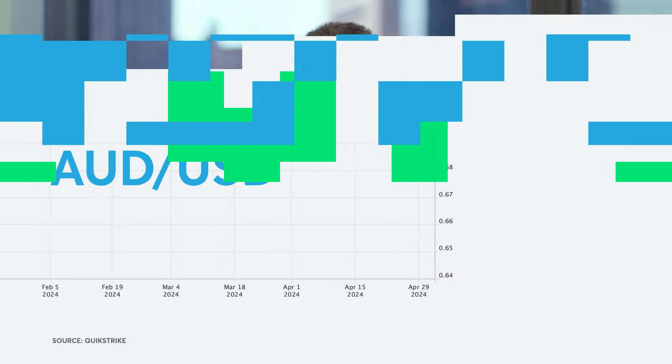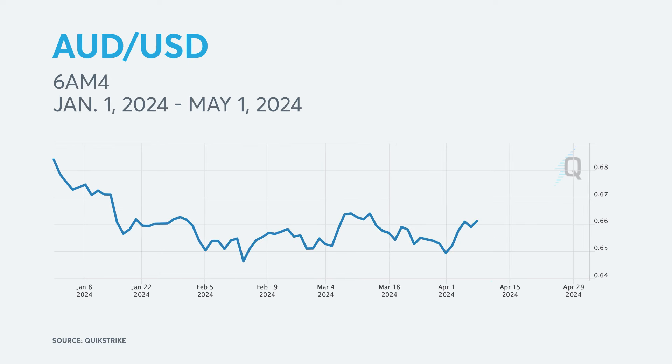Will the recent run of negative economic headlines out of Asia weigh heavily on the Australian dollar? The Aussie dollar is currently down over 5.5% since the beginning of the year. Of course, much of that move has been fueled by the evolving domestic story.